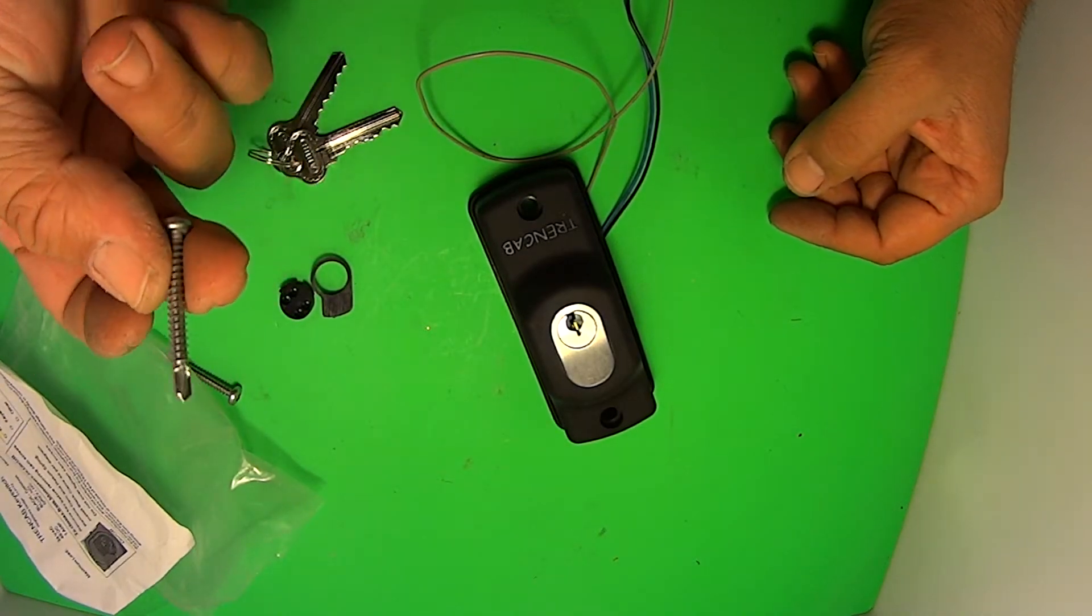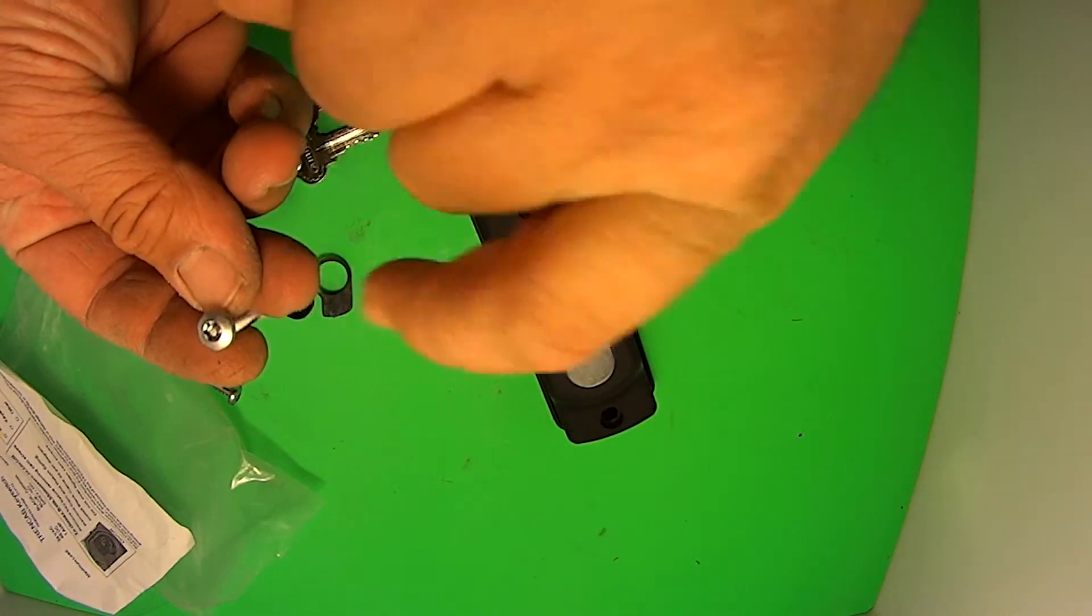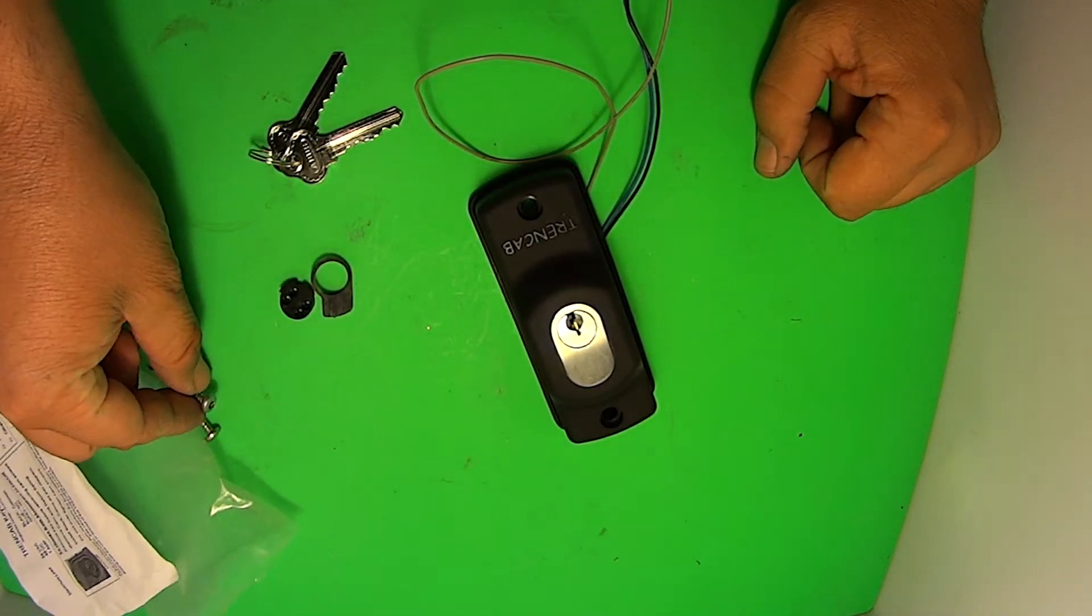These screws are included. Self-tapping screws. And they also come with the security head on top. That's not included, the security tool. You'll need to have one of them on your own. I'll give you some measurements as well.